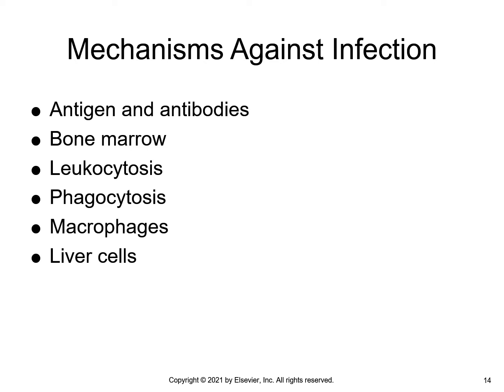Bone marrow is a major component of the defense system; it manufactures the blood products the body needs to defend itself, including leukocytes — which include neutrophils, macrophages, and lymphocytes. Leukocytes are white blood cells. Leukocytosis means an increased number of white blood cells and is routinely seen at the beginning stage of an infection when the immune system has not yet been overly stressed. Leukocytosis is seen more with bacterial infections than with viral infections.